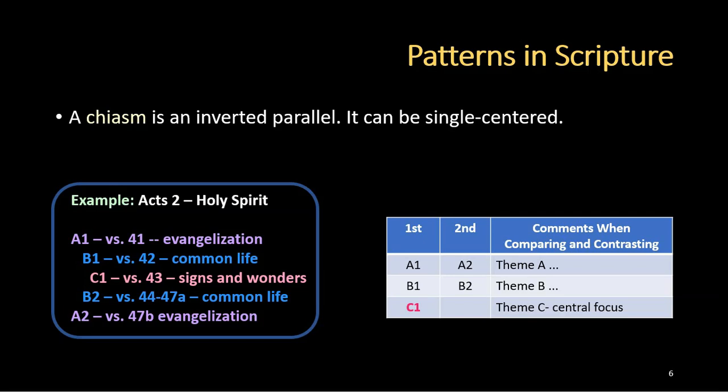Normally when I'm looking at a chiasm like this, I set up a chart. In the first column I'll have A1, B1, and C1, and any additional elements as needed. When it reverses order, I'll have B2 lined up with B1, and A2 lined up with A1. I still have comments when comparing and contrasting those, and we'll have the theme for A, B, and C, as you can see here in this chart.